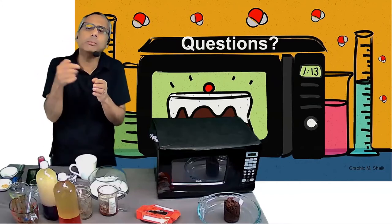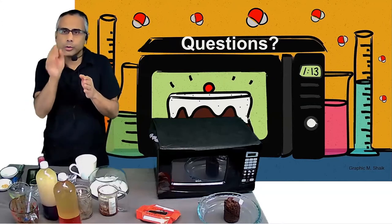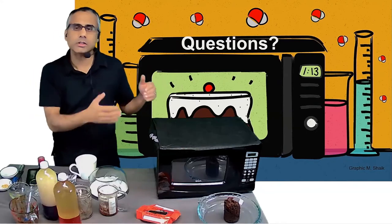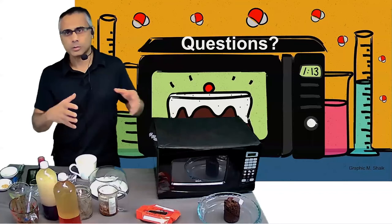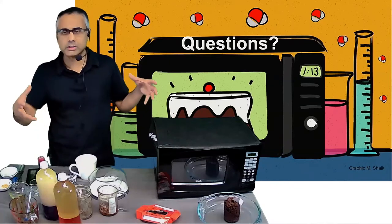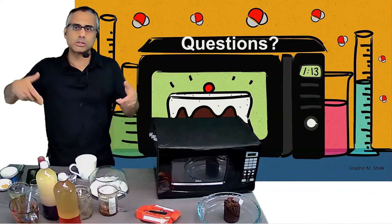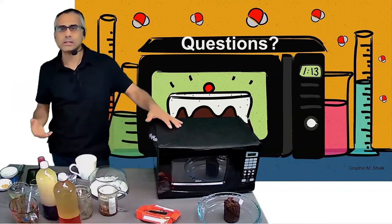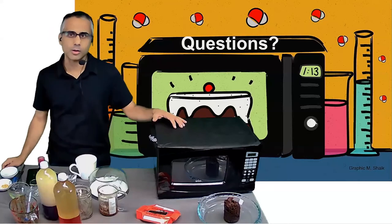Once the microwave hits the surface of the food, it gets refracted toward the center. It can only penetrate a certain distance — the wavelength is about 12 centimeters — so thin pieces of food heat up much faster. Practically, you really only need three buttons: the power level button, the time button, and the on button. Use lower power when you have food with water and other components, so that the water parts don't start boiling before the rest is heated.